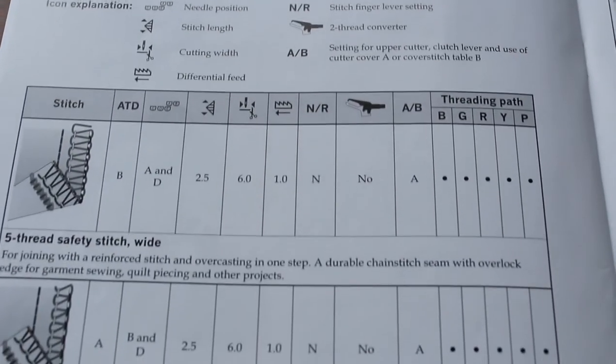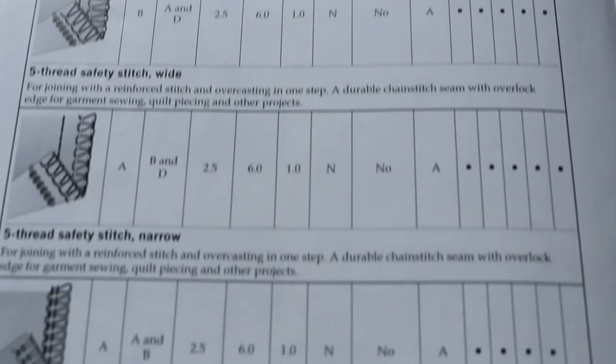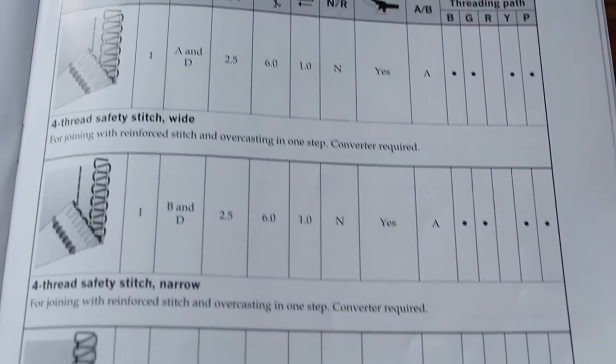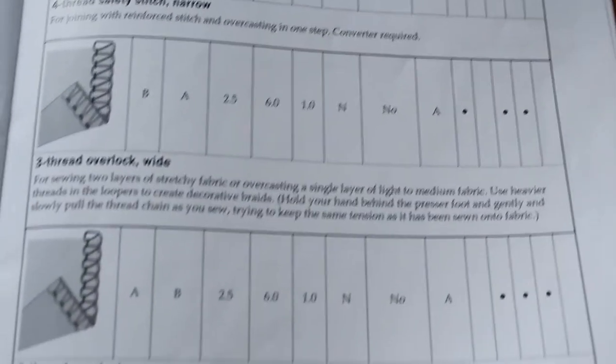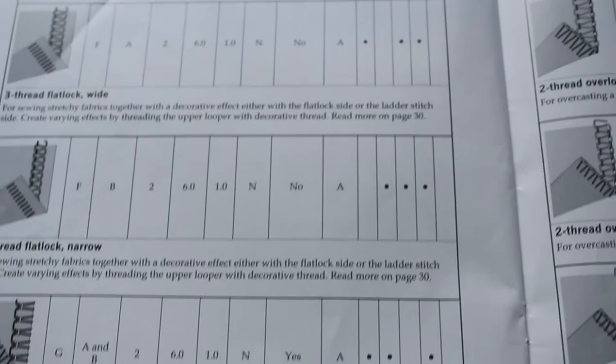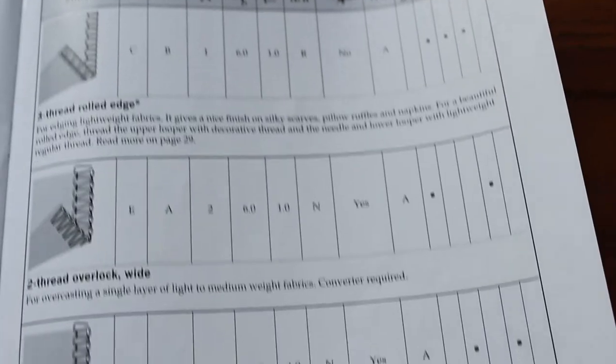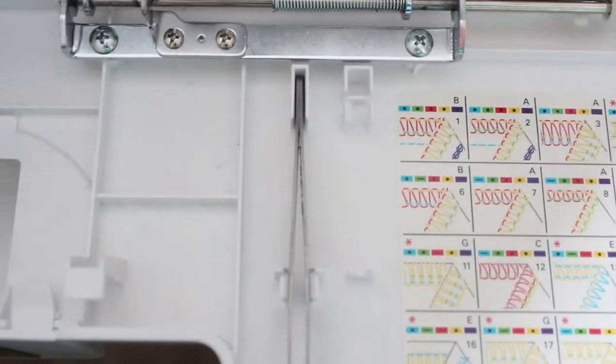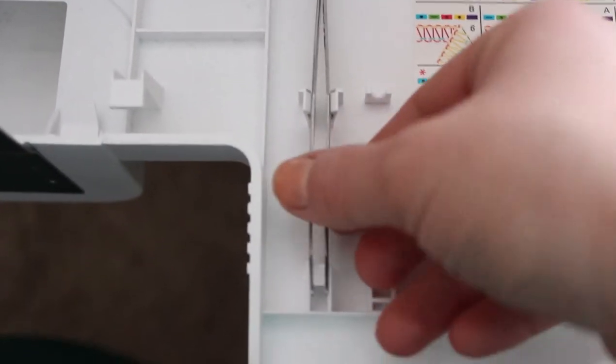The machine came set up as a serging function, so I really like how easy it is to switch over. Even though I don't use both, I do know how easy it is to switch over, and the manual has a really awesome chart that just shows you what threads you need and what loopers and everything is needed. It came with these tweezers and there's a handy little spot to put tools right in here.